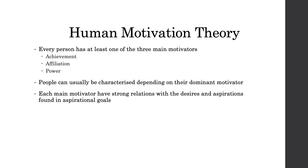Human motivation theory, otherwise known as the three needs theory, states that every person has one of three driving motivators: the need of achievement, affiliation or power. It suggests that people all have a need to fulfil one or more of these motivators, and they will often lead to a higher quality of life. Each of these three driving motivators can be suited as similar to aspirational goals, as they have various features that coincide with the requirements of aspirations.